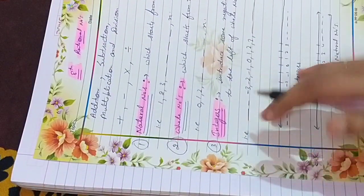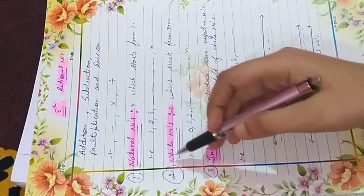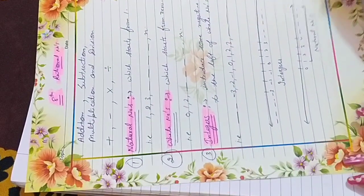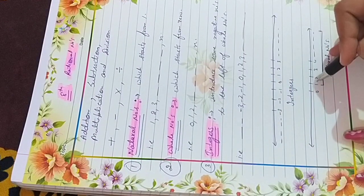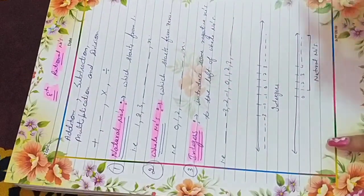Now, just note down these points. Point number 1, 2, 3 and point number 4. Also these number lines on your notebooks. Thank you.